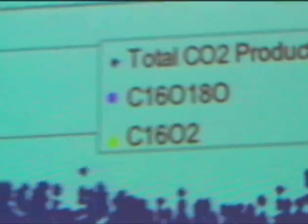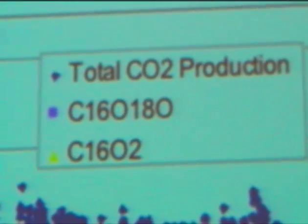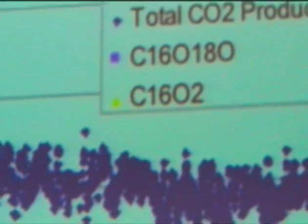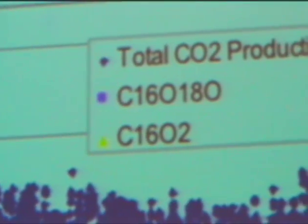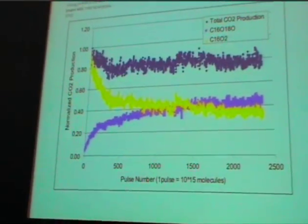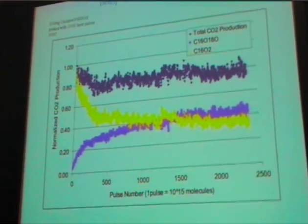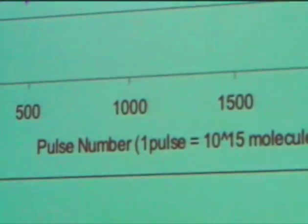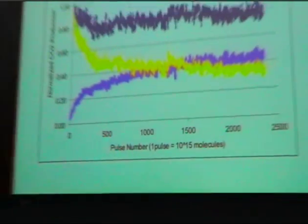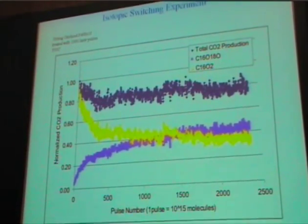And this is what we get. The blue trend is overall CO2 production, labeled and unlabeled. And yet again, we see this two-phase area. First, in the beginning, we see this decrease, which is because we expect that we are removing some of the easily accessible oxygen. And then as we're replenishing it under high vacuum conditions, we're not able to replenish it to the completely oxidized state. So, we reach this somewhat steady state value.